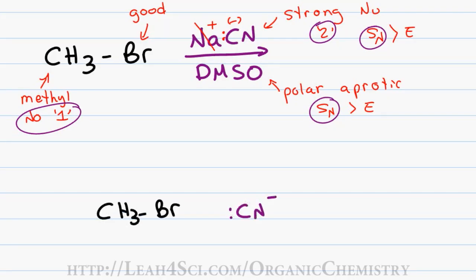For the SN2 reaction of cyanide with bromomethane, the lone electron pair on the CN- will attack the methyl carbon, kicking out the bromine leaving group. For the final product, I have my CH3 now bound to the CNN.